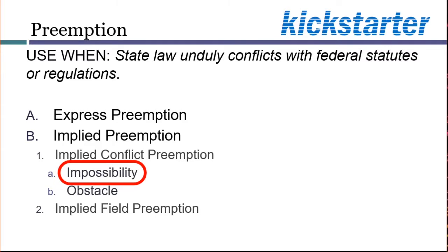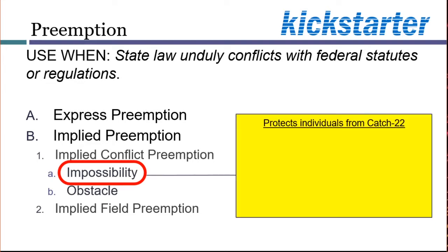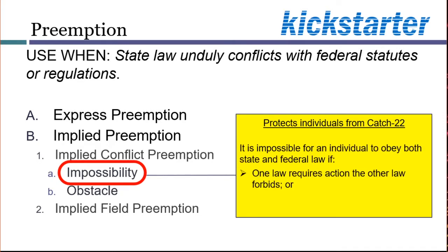One type of conflict that would invalidate a state law is usually called impossibility, although it's sometimes called a direct conflict. The impossibility concept is designed to protect individuals from getting caught in a Catch-22, where no matter what they do, they would be violating either a state law or a federal law. The most obvious sort of impossibility would arise if one law required a person to do something that the other law forbids — such as a federal law requiring people to carry guns with them at all times, and a state law making it illegal for people to carry guns on them at any time.